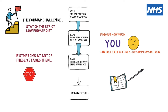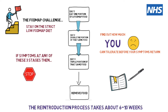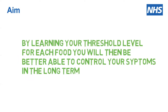If you get through all the way to day three with no symptoms at all, then you don't need to wait — you can just move on to test the next food straight away. The reintroduction process should take about six to ten weeks, during which time you'll remain on the strict FODMAP diet throughout. The aim of this process is that you're learning your threshold level for each food, and you'll be better able to control your symptoms in the long term.